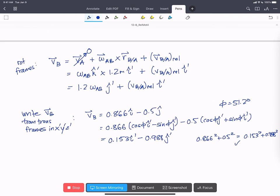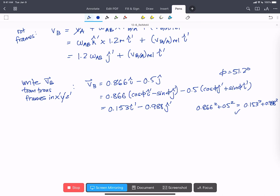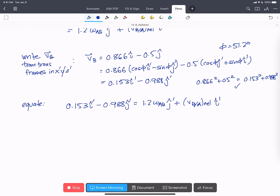So now we have two expressions for VB and they're both in the same coordinate system. So now we equate them. So we can say 0.153 I hat prime minus 0.988 J hat prime equals 1.2 omega AB J hat prime plus VB with respect to A relative the scalar in the I hat prime. And then we look at components. So we can write I hat prime 0.153 equals VB with respect to A relative the scalar. And in J hat prime minus 0.988 equals 1.2 omega AB. That tells us that omega AB equals minus 0.824 rads per second.